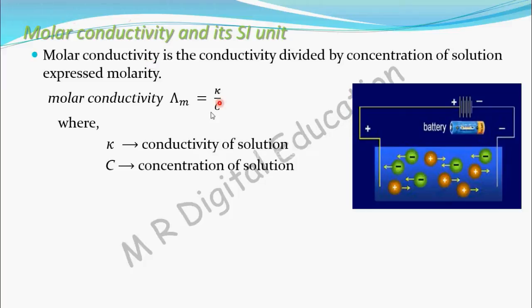One more thing to remember when solving problems: concentration here means molarity, which is mol per liter. But here we take mol per meter cube — we convert mol per liter to mol per meter cube. Remember that point. Molar conductivity is conductivity divided by concentration expressed in molarity, but while taking that molarity, instead of mol per liter, we will convert it into mol per meter cube.